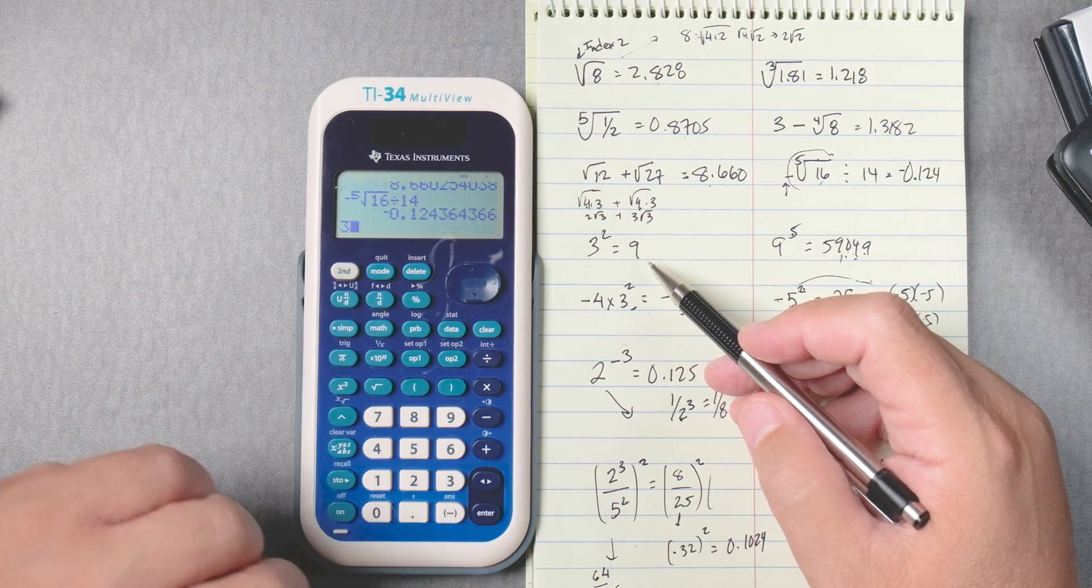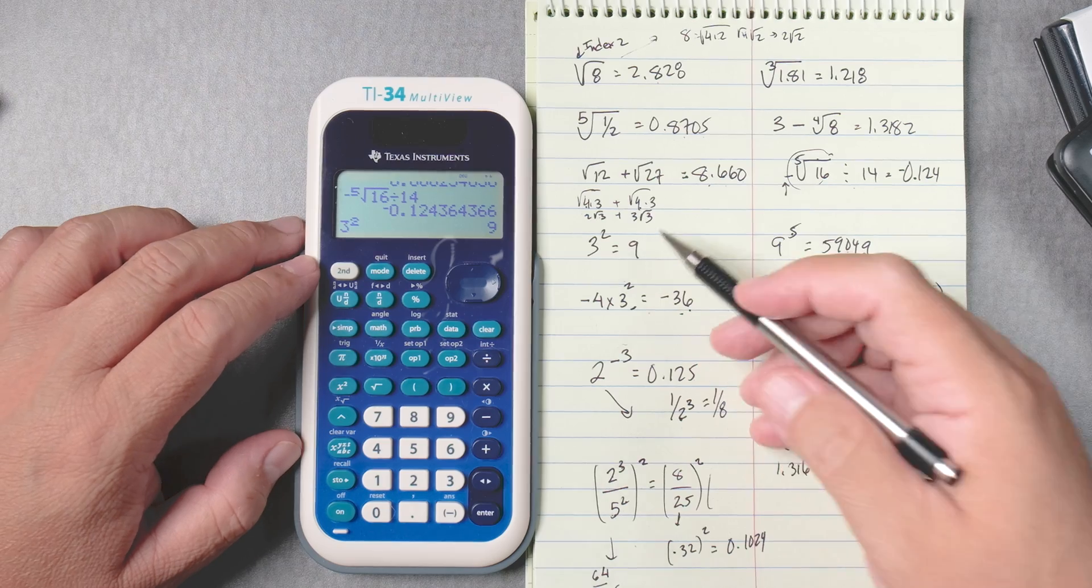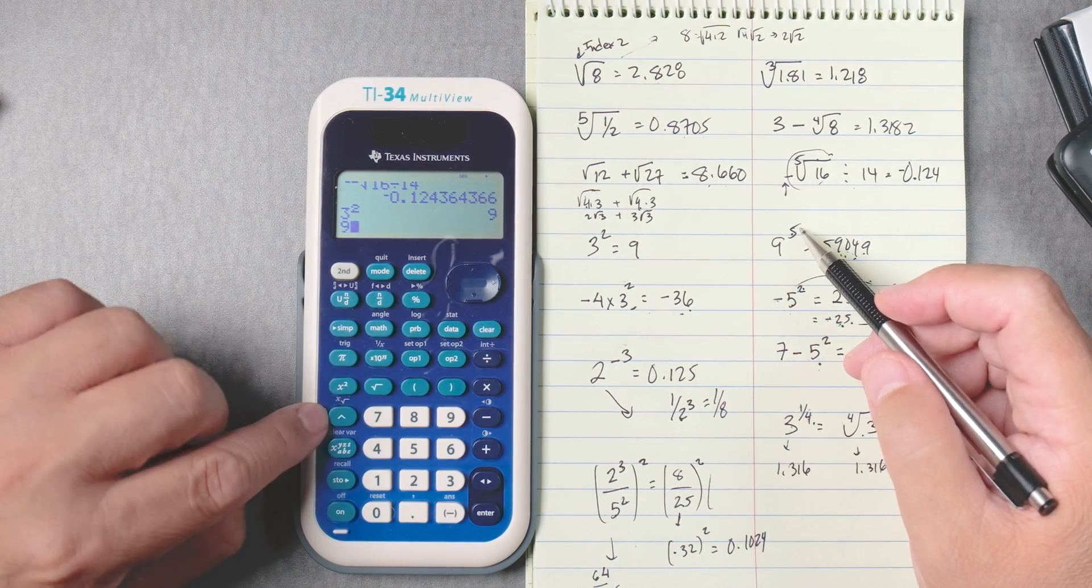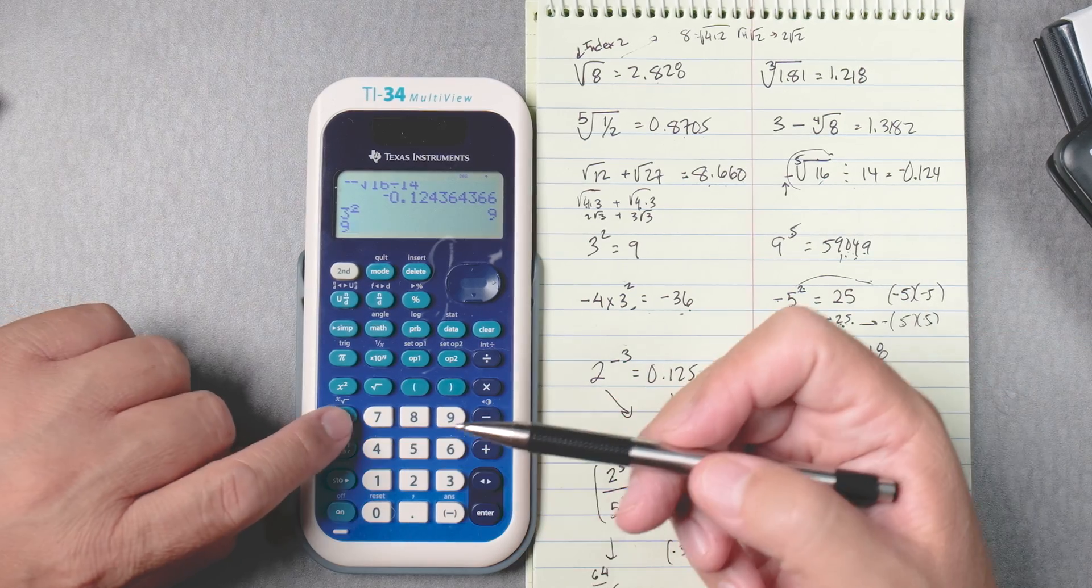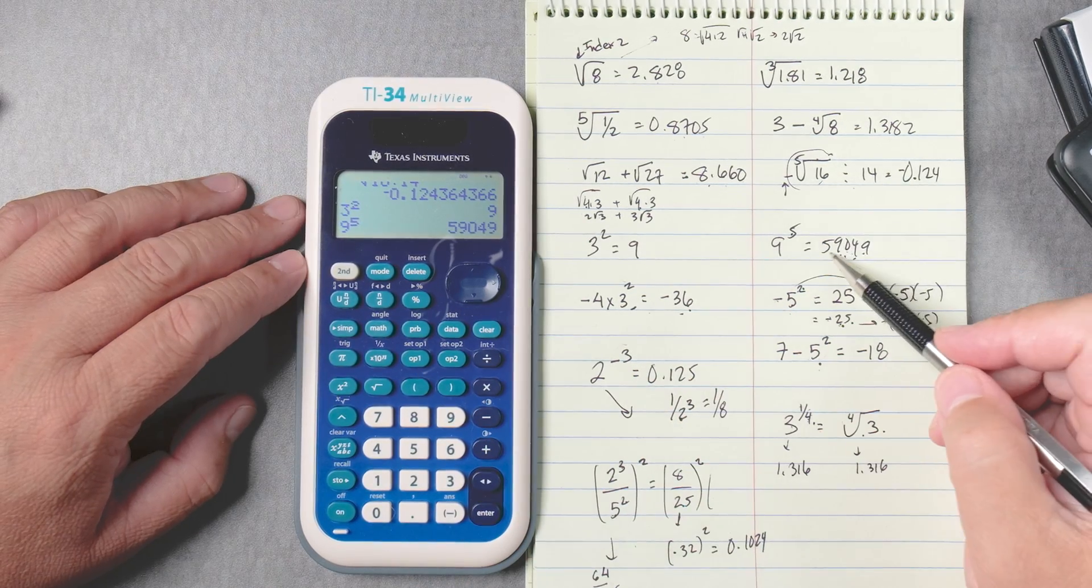Next one, 3 squared, enter, 9, straightforward. 9 to the 5th power, 9, we use the caret key, it's right here, this one, caret, to the 5th, enter, 59049.